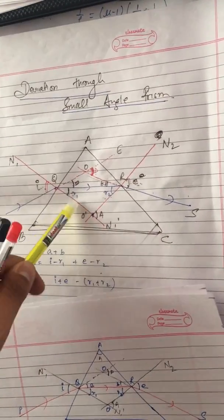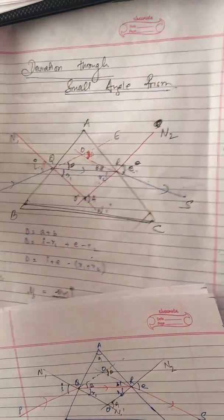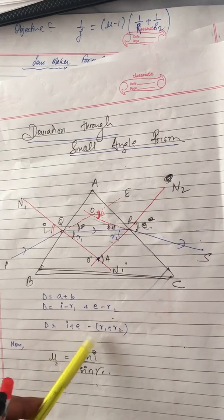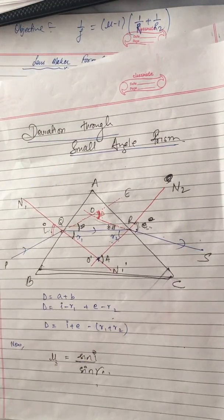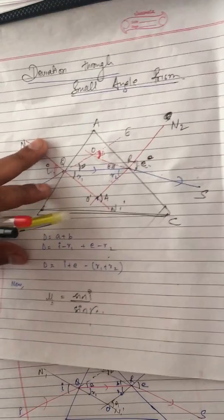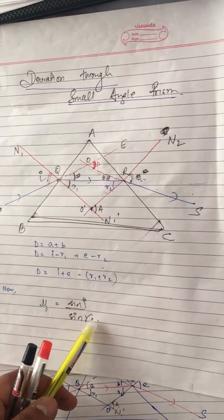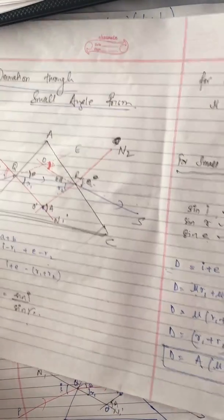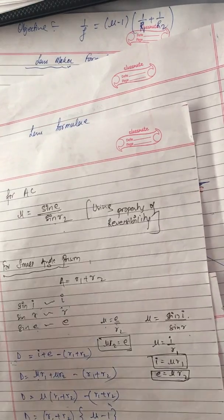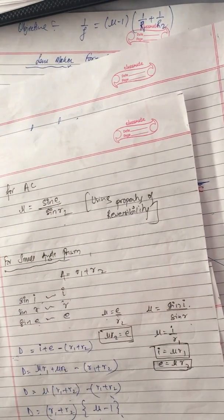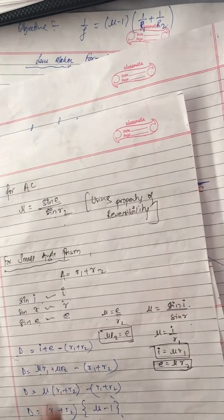We are lucky that the refractive index mu equals sine i over sine r. We can also write mu equals sine e over sine r2. So using Snell's law: mu equals sine i over sine r1, and mu equals sine e over sine r2.